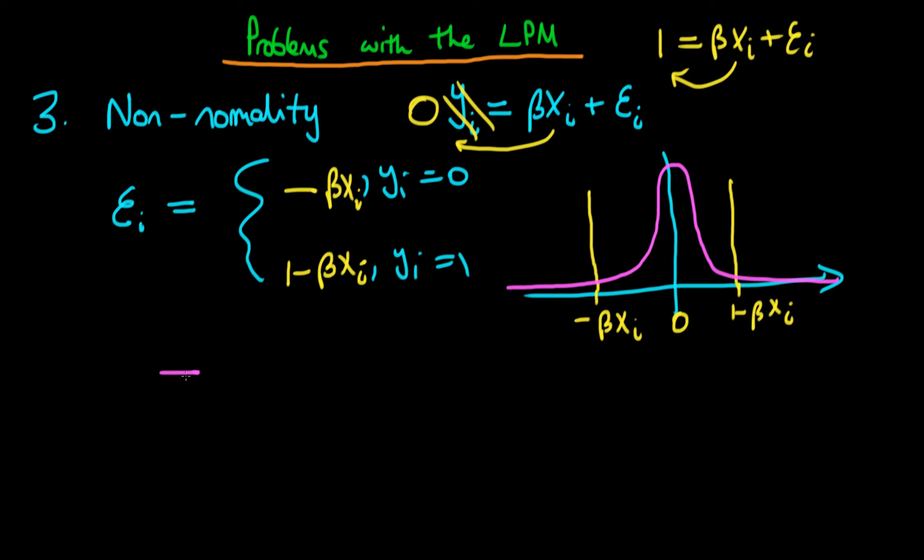So the issue with the linear probability model is that because of this discrete nature of the errors, we're going to run into some issues using normal distributions for inference in small samples.